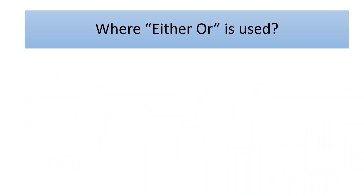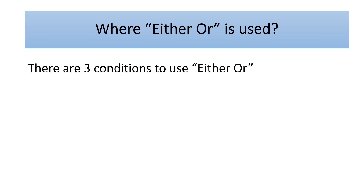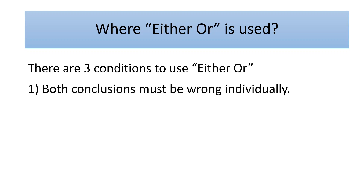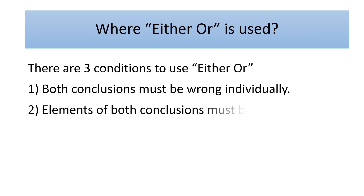First of all we are going to learn when either or is used. There are three conditions to use either or. The first one is both conclusions must be wrong individually — conclusion one must be wrong and conclusion two must be wrong. The second condition is elements of both the conclusions must be same — the elements in conclusion one and conclusion two must be same.